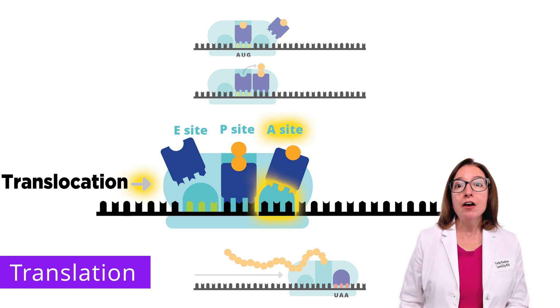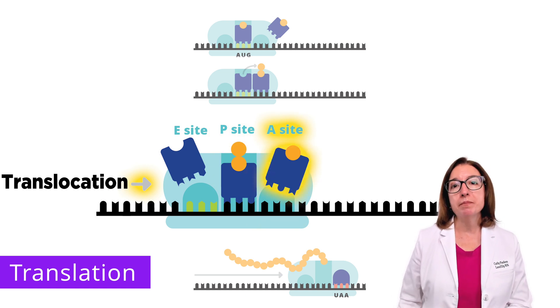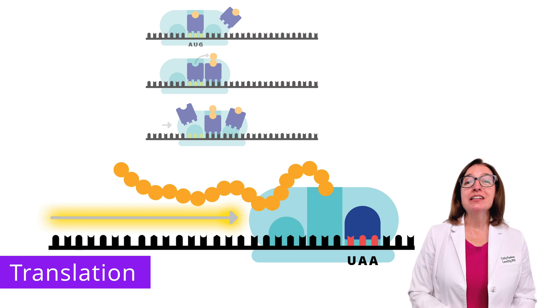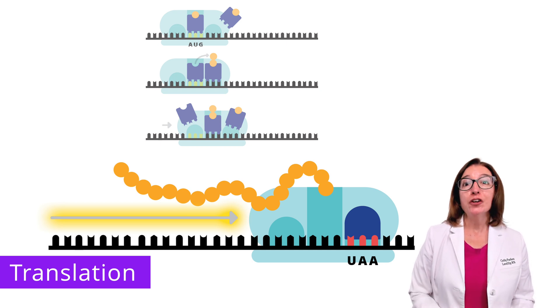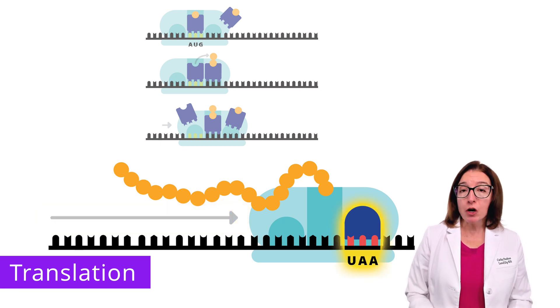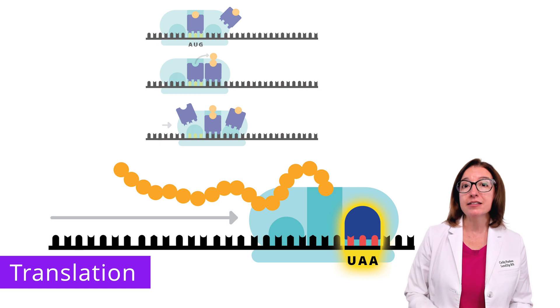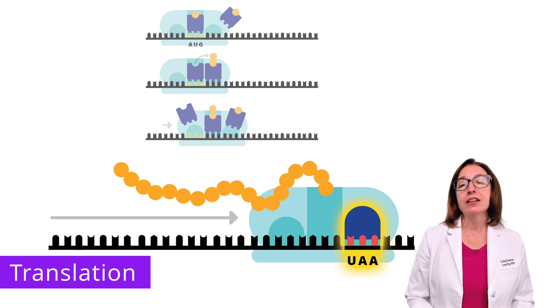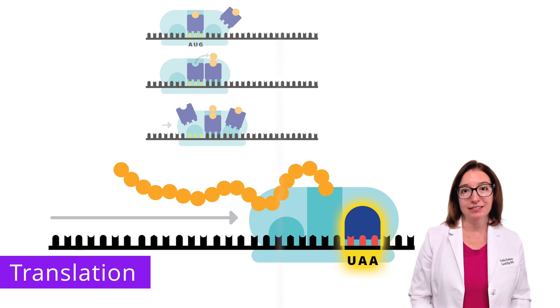The second tRNA moves to the P site, which opens up the A site for the next tRNA carrying another amino acid. The ribosome continues to move forward in this fashion, adding new amino acids onto the growing polypeptide. Once the ribosome reaches a stop codon at the A site, such as UAA seen in this image, the polypeptide is released and the large and small ribosomal subunits separate. Of note, after translation, the polypeptide does have to go through several processing steps before it becomes activated, including folding of the polypeptide as well as various chemical modifications.